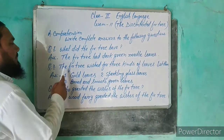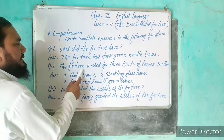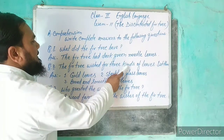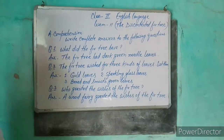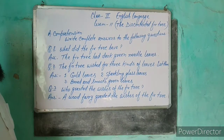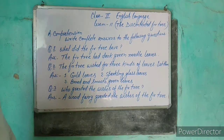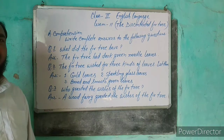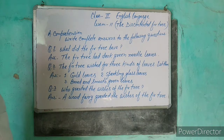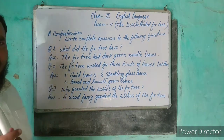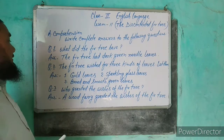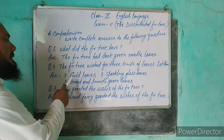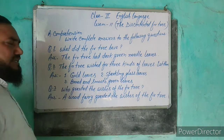Question number 2 है: The fir tree wished for three kinds of leaves — list them. कहा जा रहा है कि fir tree ने तीन kinds की wish की थी। वो क्या-क्या था? उसे list कीजिए। तो answer देखिए — first time उसने जो wish किया था, कि मेरी पत्ती सोने की हो। First: Gold leaves — सोने की पत्ती।